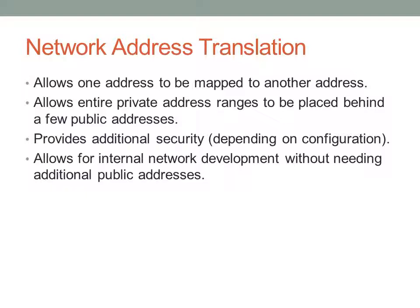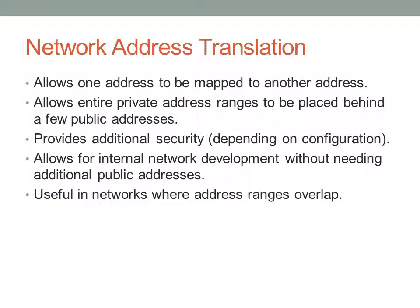NAT also allows for internal network development without having to worry about getting more public addresses. In an addressing system where everything runs on public addresses, expanding your network involves acquiring more public IP addresses, which can be very expensive for bigger networks. Instead, you only need to expand private address ranges and possibly buy a few more external addresses. NAT is also useful when networks have overlapping address ranges — say two merging companies both using 192.168.1.0. NAT can make one network appear to the other as 192.168.2.x without actually changing the IP addresses on the devices.